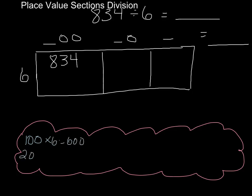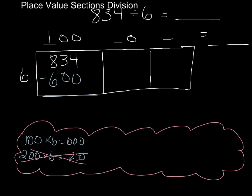If I had 200 groups of six, well that would be 1,200, which is way too much. So I can't get more than 100 groups of six. Let's try 100 groups of six — that means if I make 100 groups of six, I've dealt with 600 of the pieces in my dividend. So what do I have left? A little bit of subtraction gives me 234.